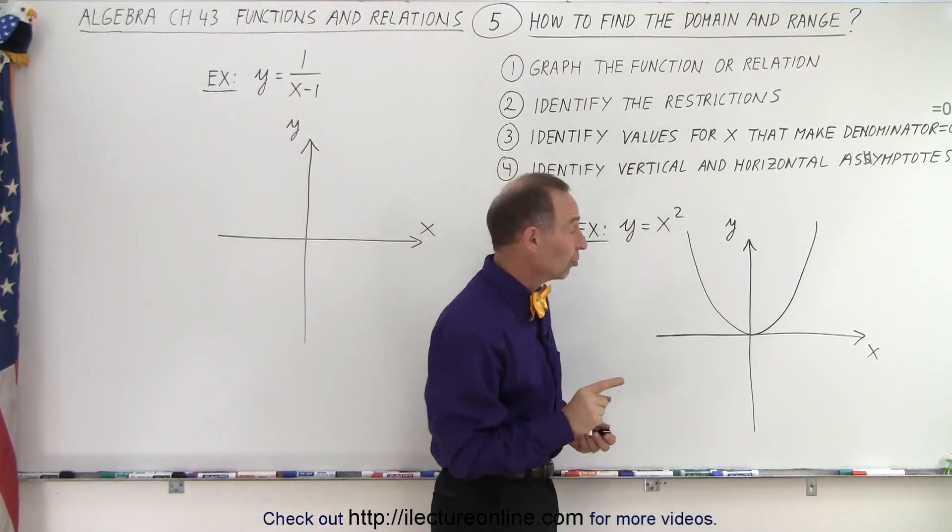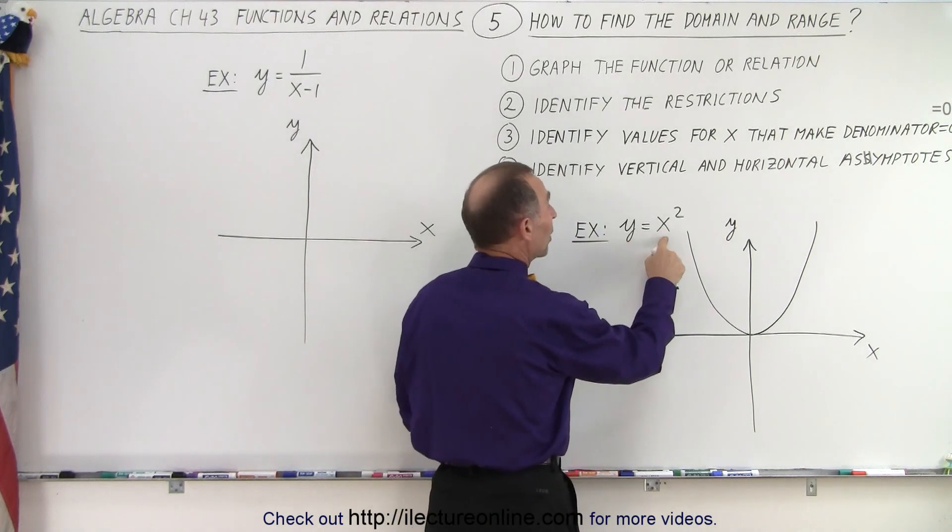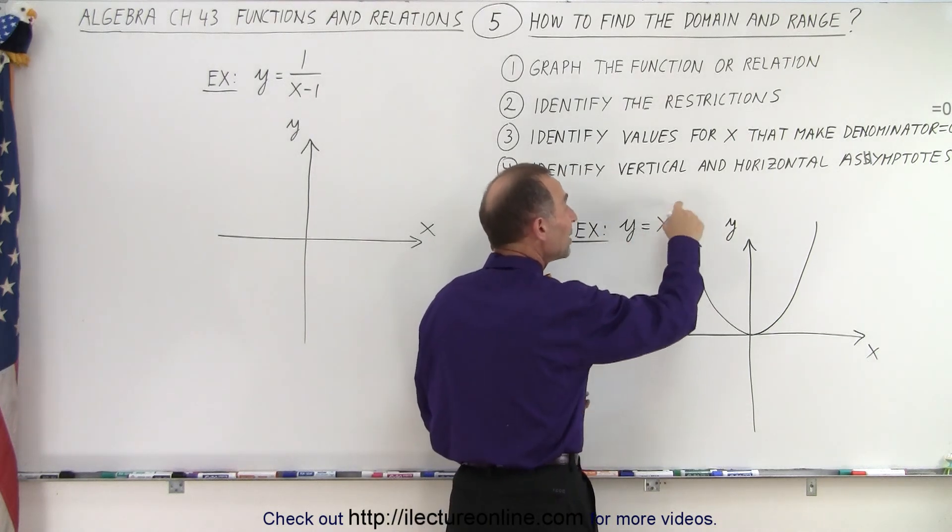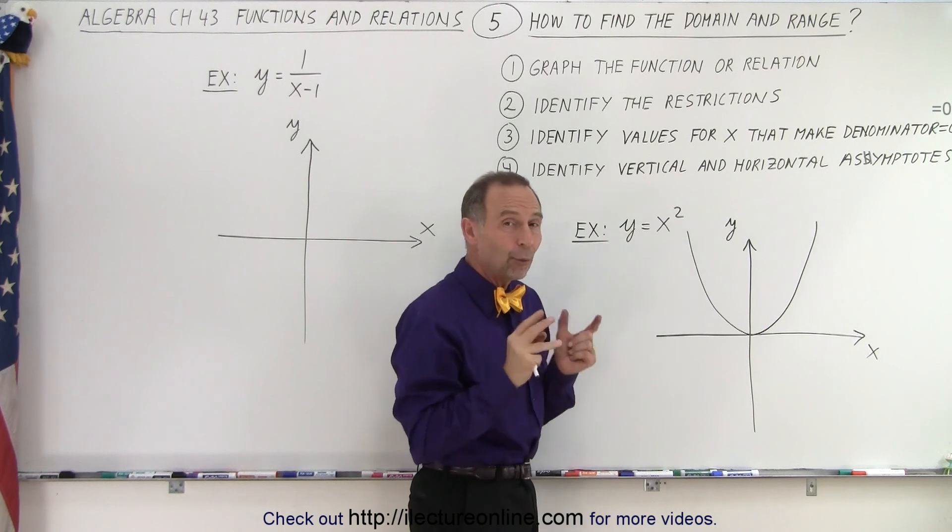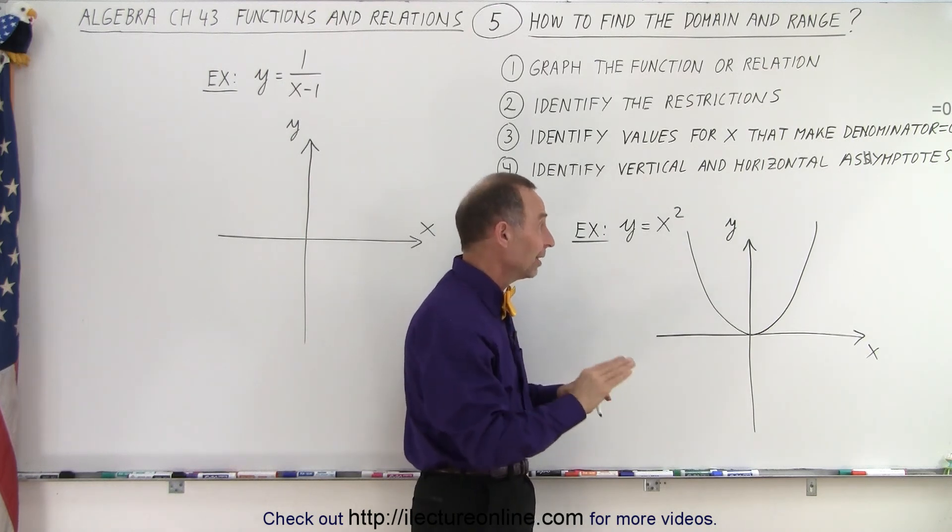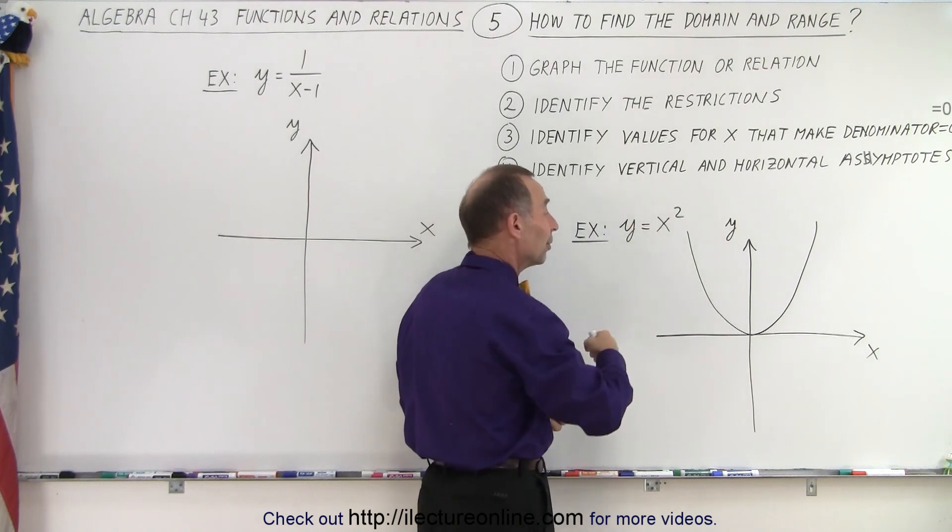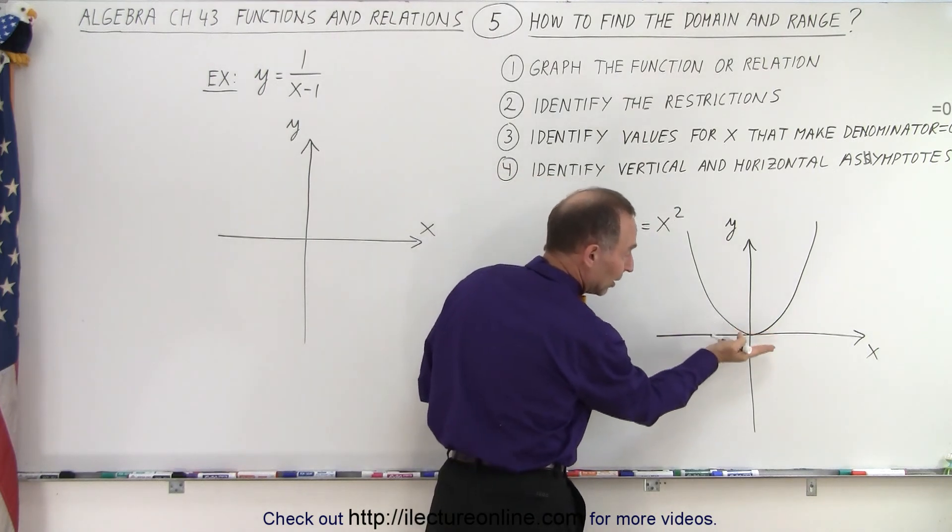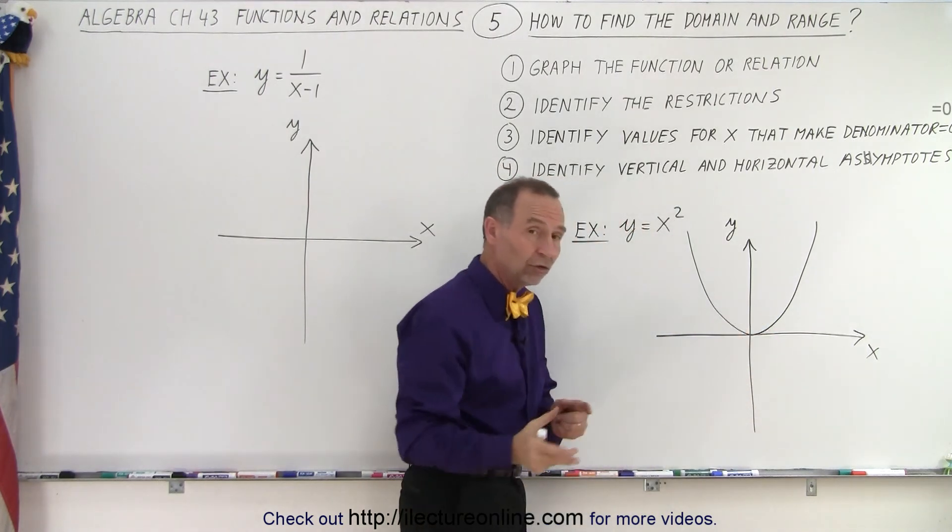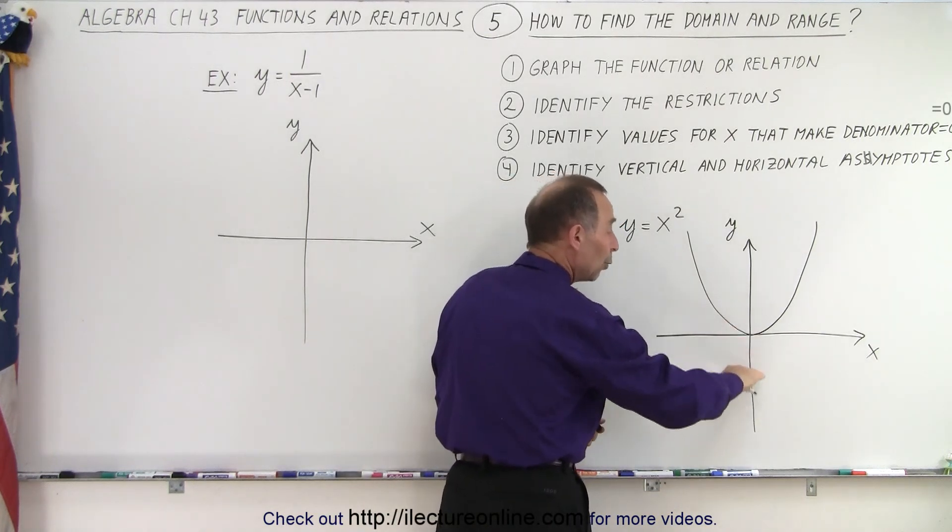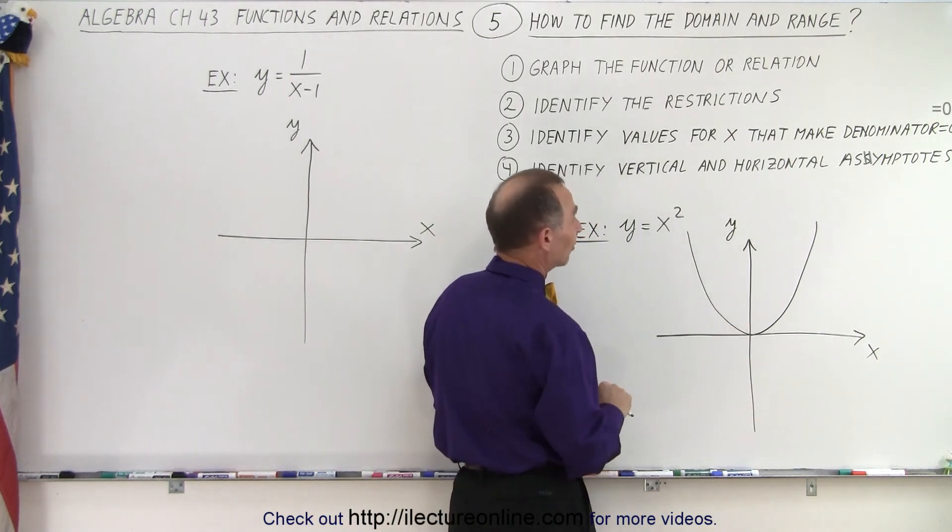Notice that there are restrictions. The fact that you have y equals x squared, x squared could only be a positive number. Therefore, y cannot be a negative number. That means the lowest value for y has to be zero or a positive number above that. You can see that the range, because the range is associated with y, cannot be negative. You cannot have any y values below the x-axis.